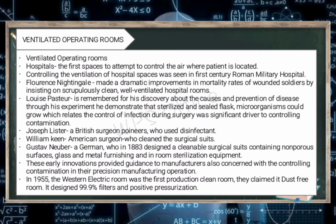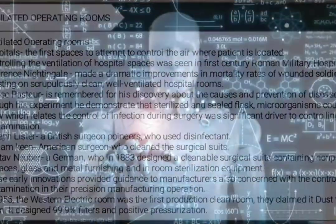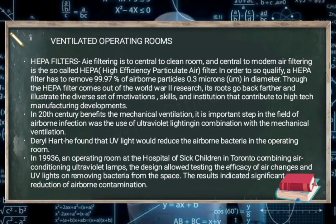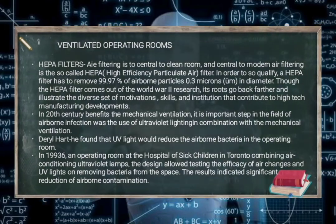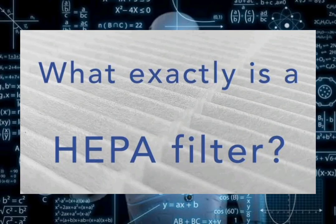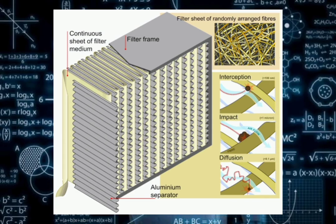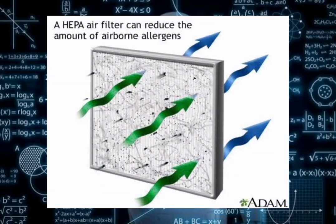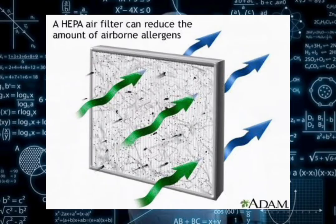In 1955, the Western Electric room was the first production cleanroom. They claimed it was a dust-free room. It used 99.9% filters and positive pressurization. HEPA filters—air filtering is central to cleanrooms, and central to modern air filtering is the so-called HEPA, High-Efficiency Particulate Air filter. In order to qualify, a HEPA filter has to remove 99.97% of airborne particles 0.3 microns in diameter. The HEPA filter comes out of World War II research. Its roots illustrate the diverse set of motivations, skills, and institutions that contribute to high-tech manufacturing developments.